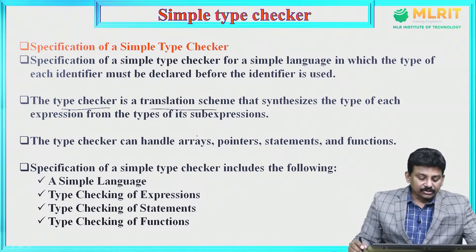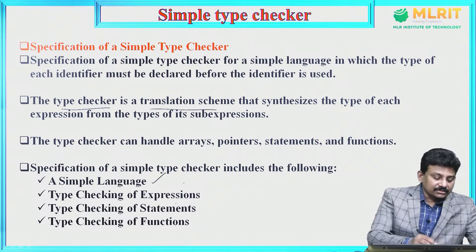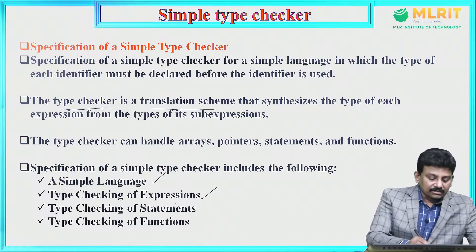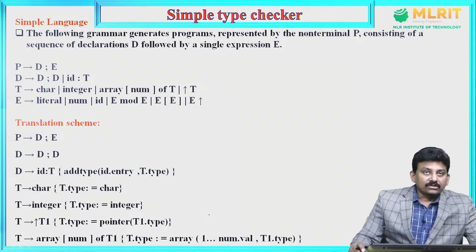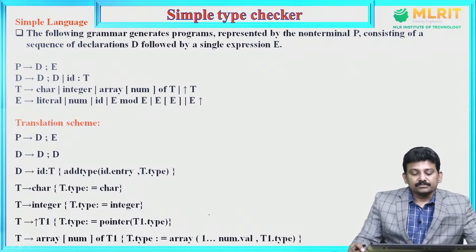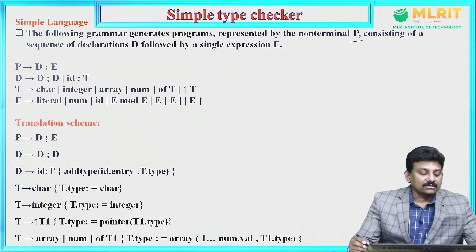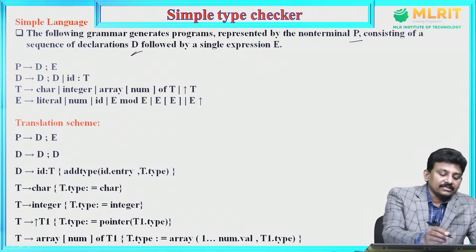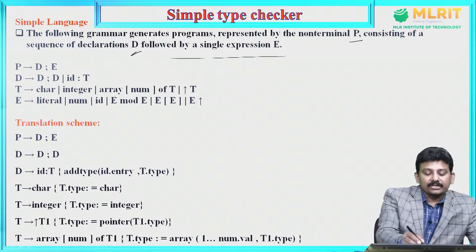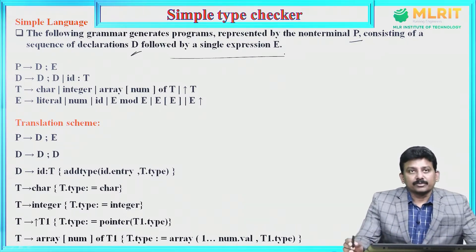Specification of a simple type checker includes the following: simple language, type checking of expressions, type checking of statements, and type checking of functions. The following grammar generates programs represented by non-terminal P, consisting of a sequence of declarations D followed by a single expression E.